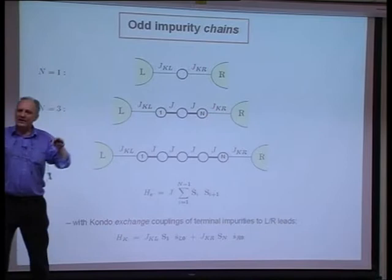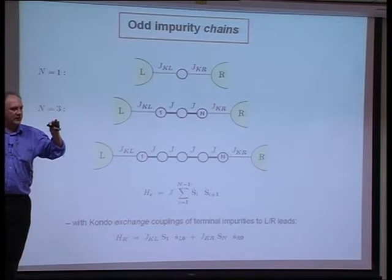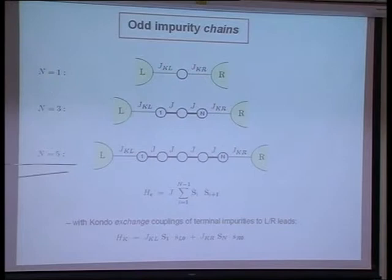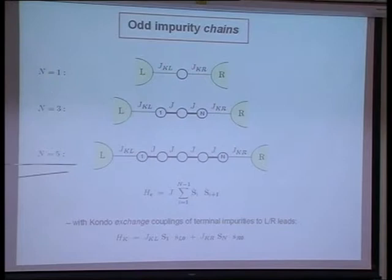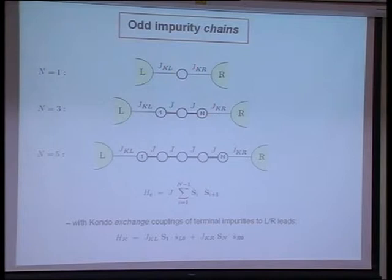And then I'll generalize to the case where the terminal end sites, instead of being spins, are Anderson-like levels with a level energy epsilon that in principle you can tune by a gate voltage, and a charging energy U. The charge in the chain can then vary continuously according to epsilon from N minus 2 to N plus 2. And finally I'll say what can we say about real quantum dot systems, where there will of course be inter-channel, inter-lead co-tunnelling charge transfer processes.